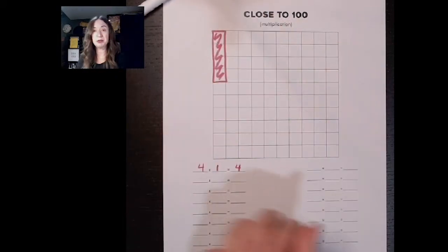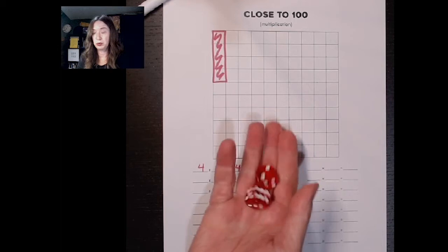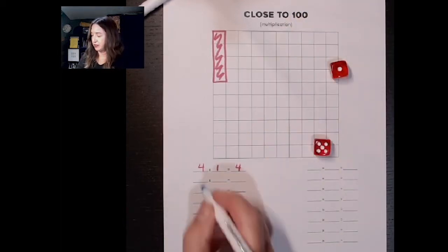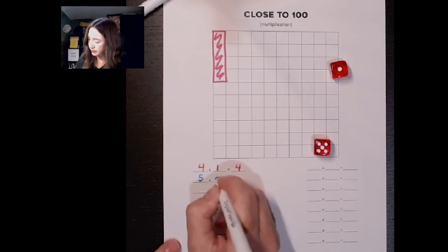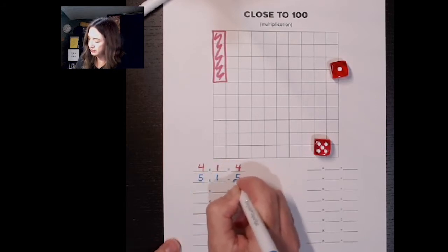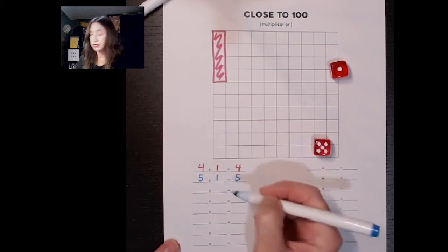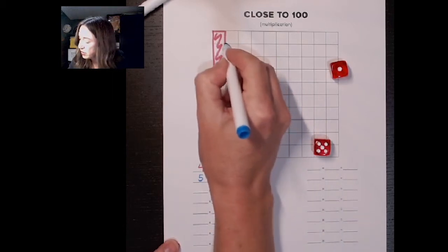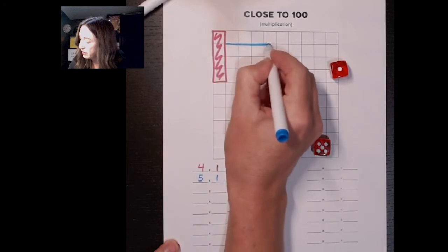Now it's blue's turn. Blue will roll. Blue got a 5 and a 1 so blue writes down 5 times 1 is 5 and then finds a place to color in an array there. Maybe blue decides to go 1, 2, 3, 4, 5.